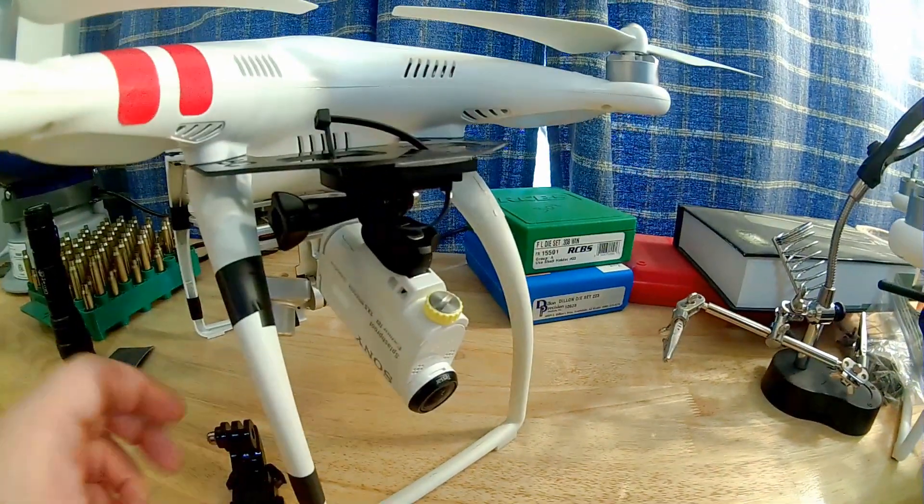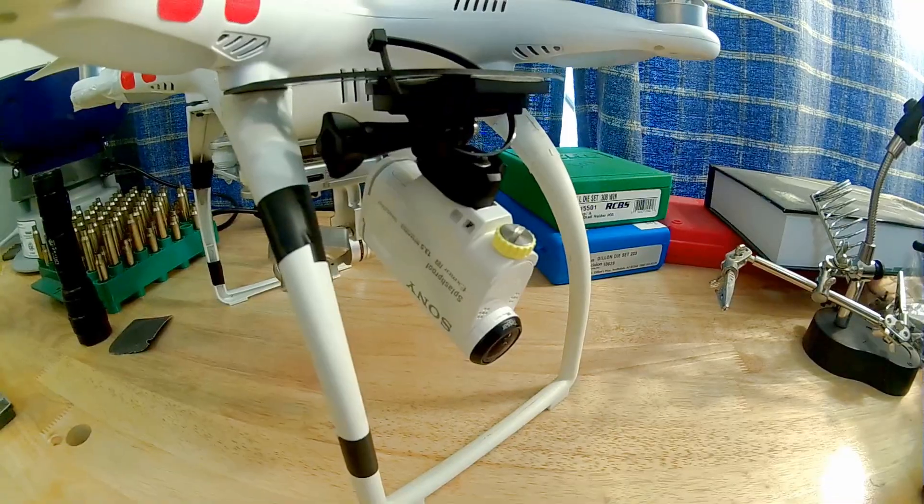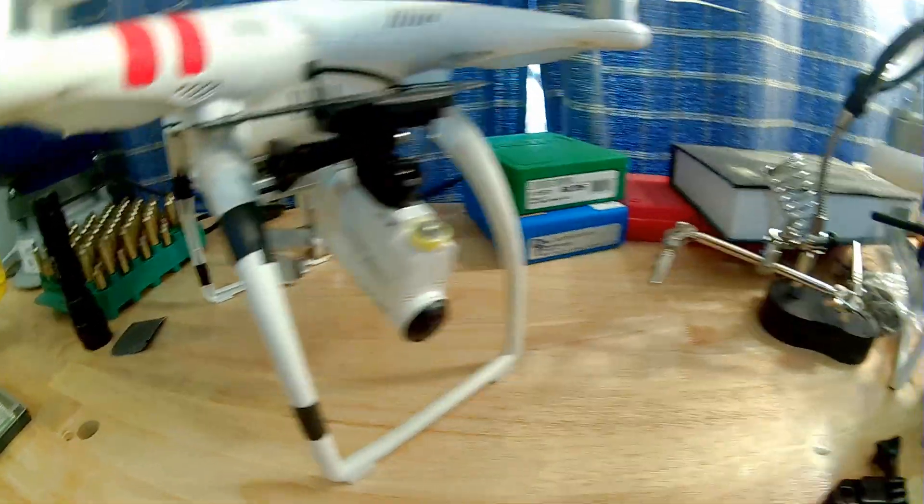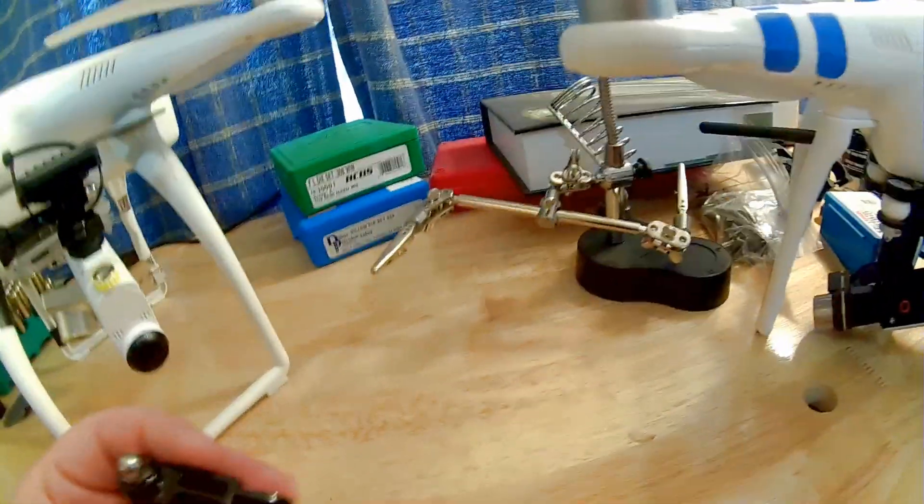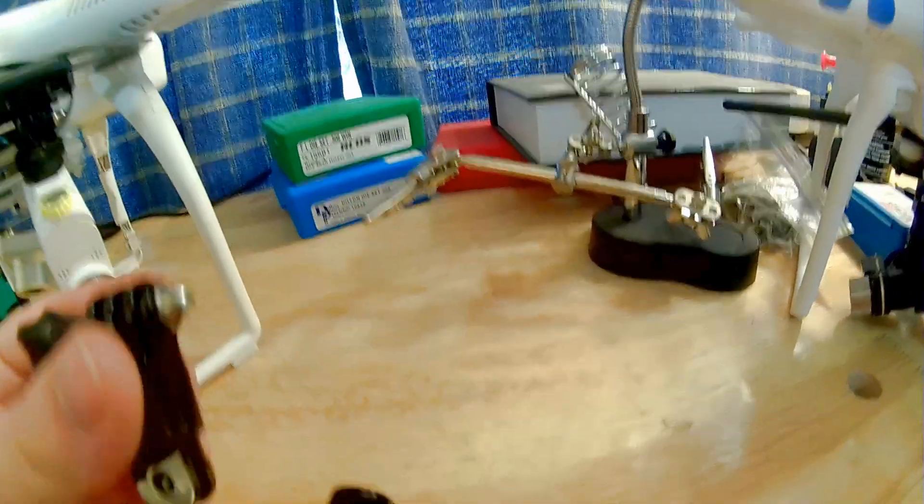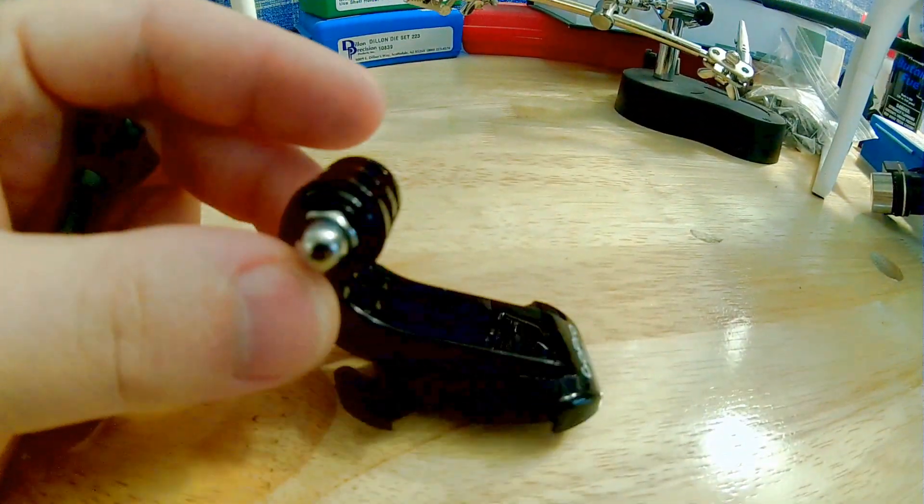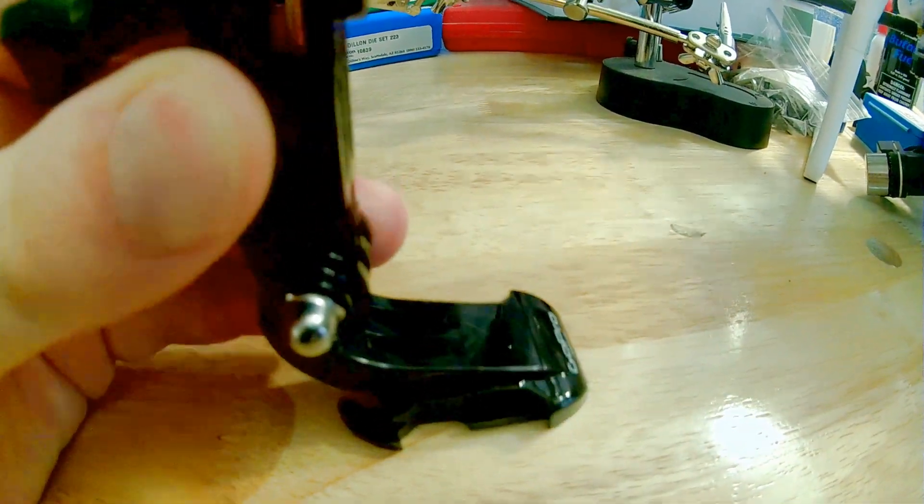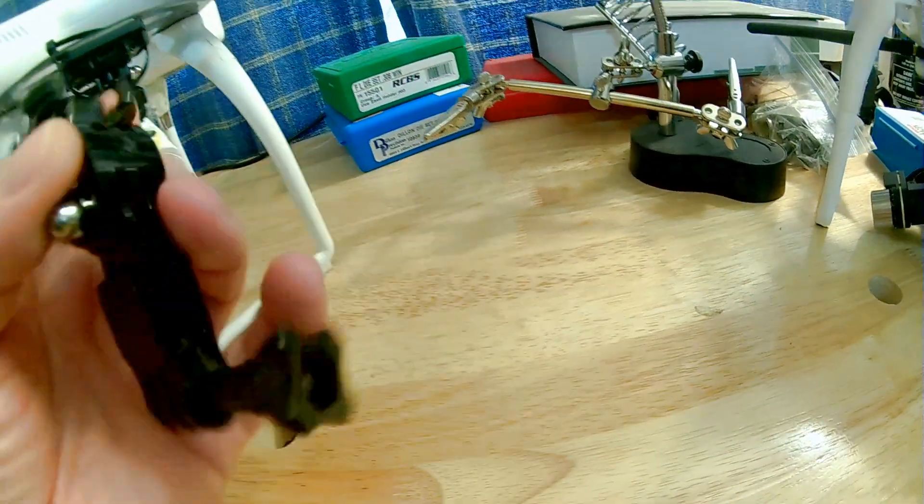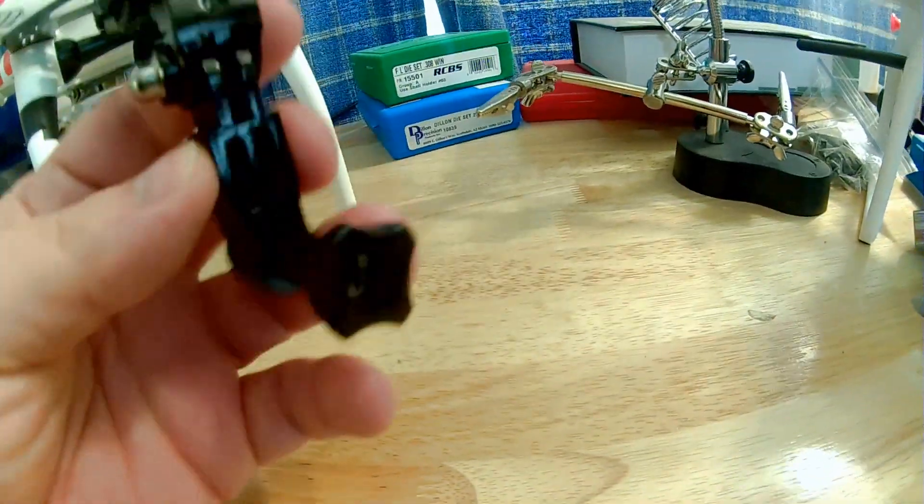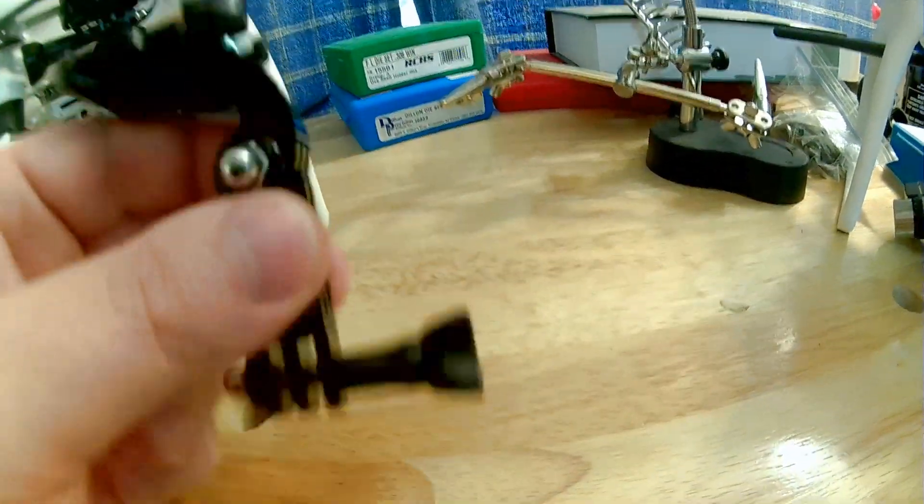Previously I was using these GoPro mounts to mount the Sony. I had this arm basically connected, plugged in up here, and the Sony was connected down here. What would happen was it would just start flapping.